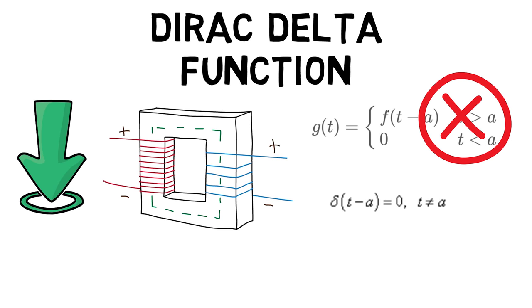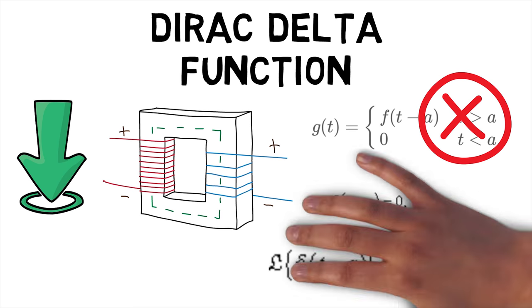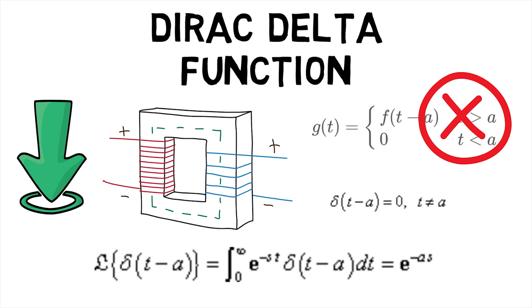Dirac delta function can be seen as the first derivative of Heaviside unit functions, as speed is for distance. One important property of Dirac delta function is δ(t - a) equals zero where t is not equal to a. At t equals a, the Dirac function is sometimes thought of as having infinite value.